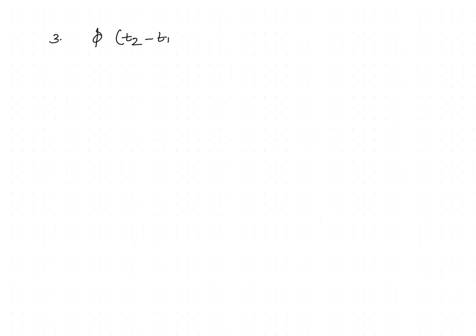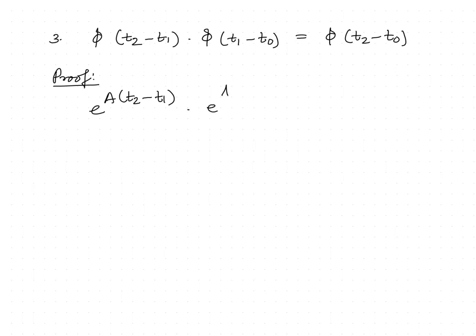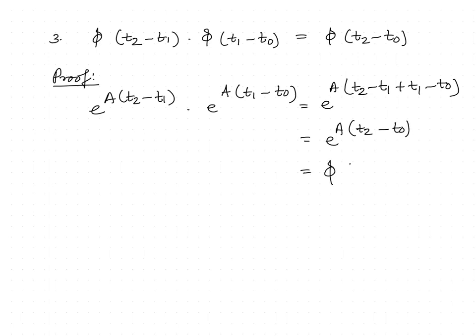We have the next property: phi(t2 - t1) · phi(t1 - t0) = phi(t2 - t0). The proof goes like this: e^(A(t2-t1)) · e^(A(t1-t0)) = e^(A(t2-t1+t1-t0)) = e^(A(t2-t0)), that is phi(t2 - t0).